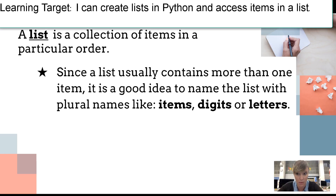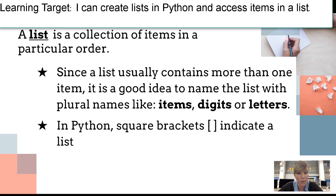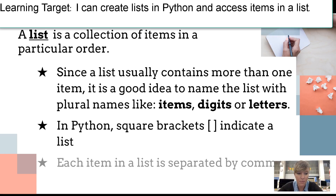We're going to give you an example of a list in just a second. The naming convention uses something with a plural. In Python, square brackets indicate a list, and each item in a list is separated by a comma.